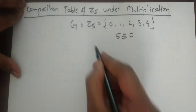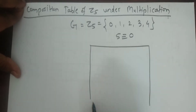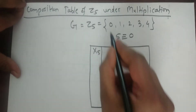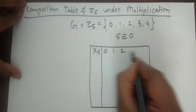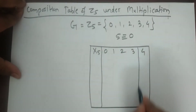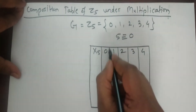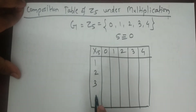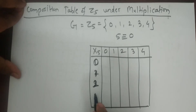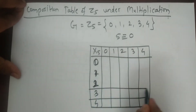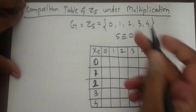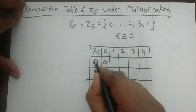So let's make the table under multiplication of Z5. Here is the multiplication sign and the elements are 0, 1, 2, 3, and 4 on both the row and column headers.